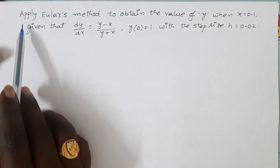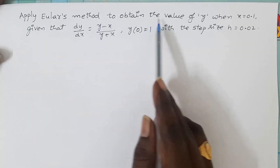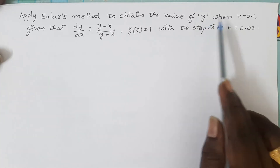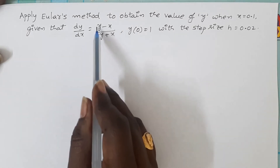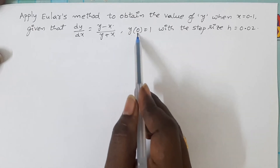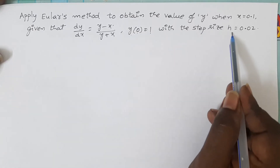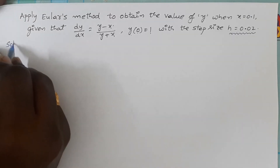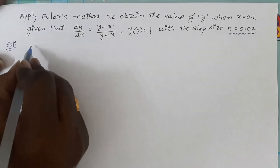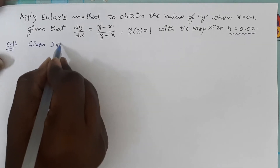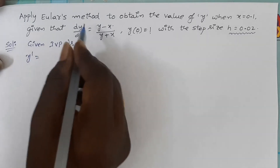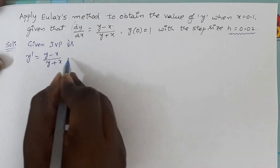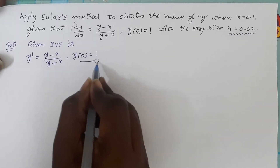This is the statement of the given problem: Apply Euler's method to obtain the value of y when x is equal to 0.1. Here we have to find the value of y at 0.1. Given that dy/dx = (y − x)/(y + x), with the condition y(0) = 1, by taking step size h = 0.02. The given initial value problem is y′ = (y − x)/(y + x), with y(0) = 1. Take this as equation number 1.